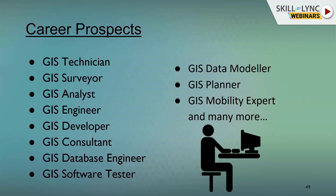If you are a civil, computer science, or environmental science engineer and you are also learning GIS, the career options include GIS Engineer, GIS Analyst, GIS Developer, and GIS Consultant. If you're interested in data science, you can be a GIS Developer. If you want to pre-process vector and raster data and create maps, you can be a GIS Engineer or Analyst. If you want to work with companies in civil engineering, urban planning, or logistics like Uber or Ola, you can become a GIS Consultant.